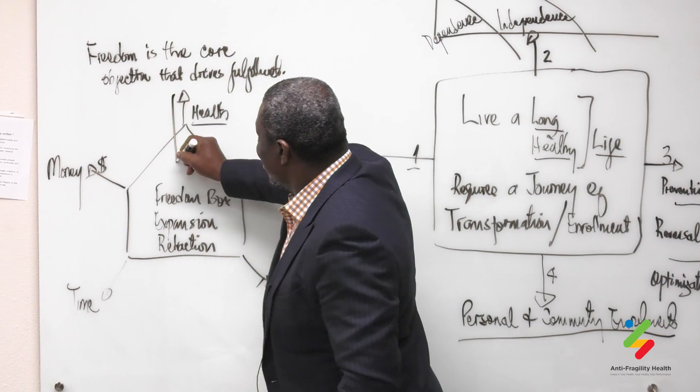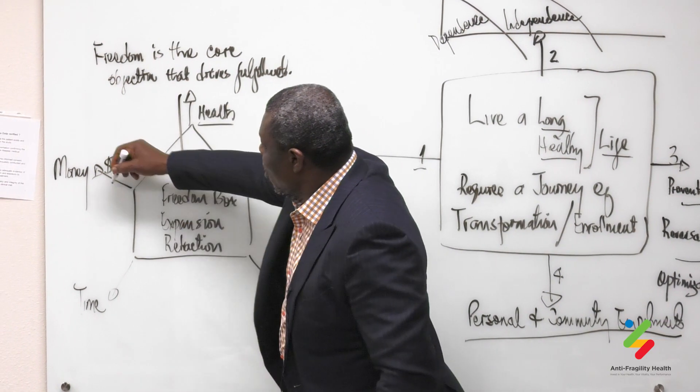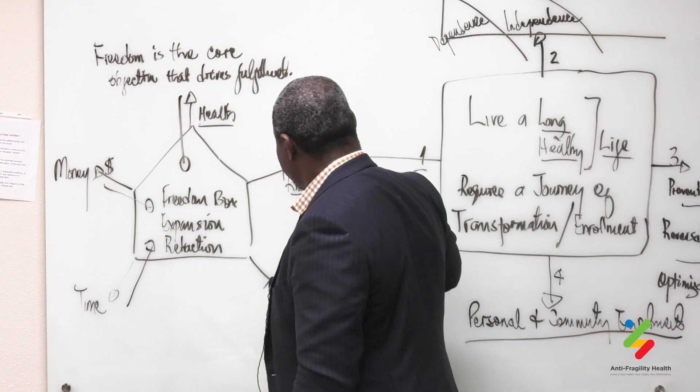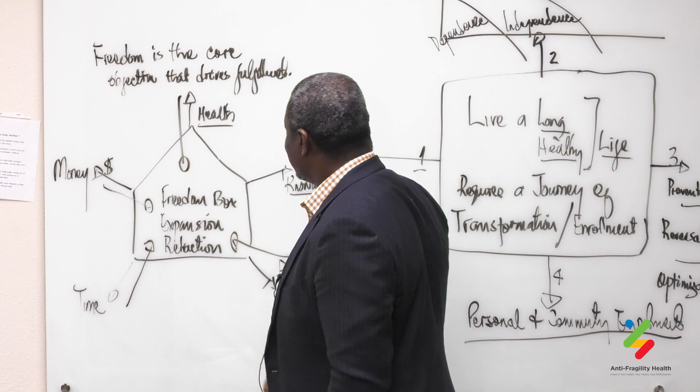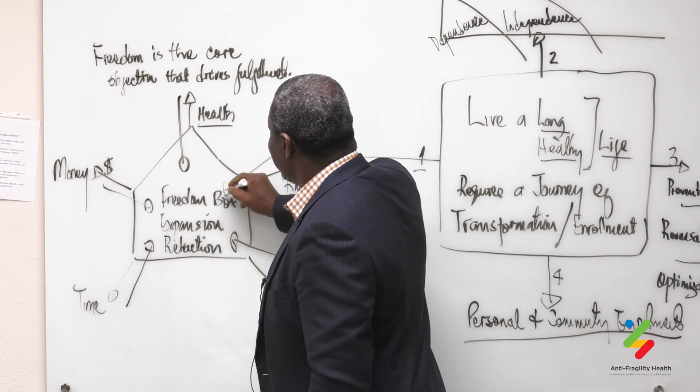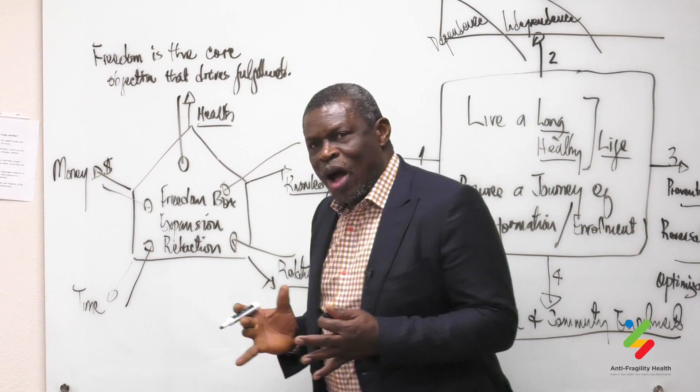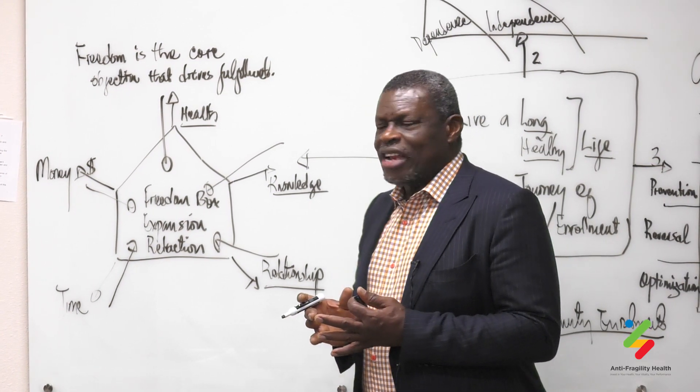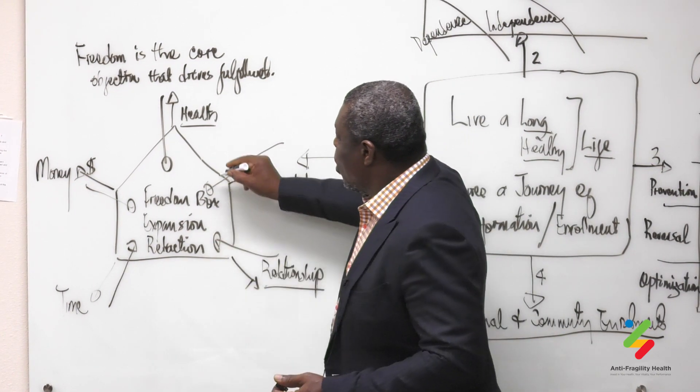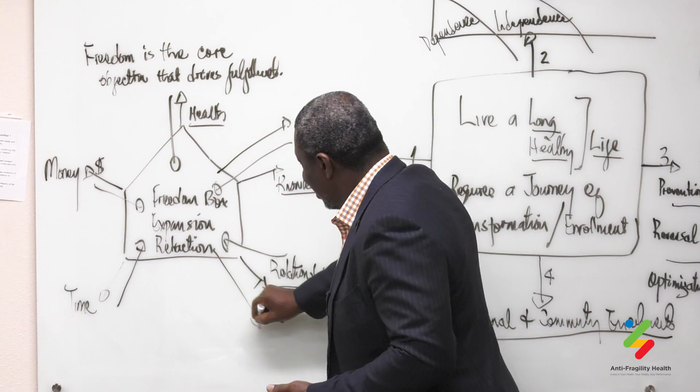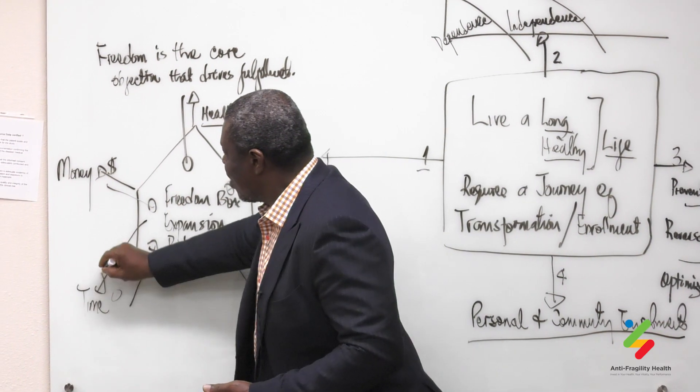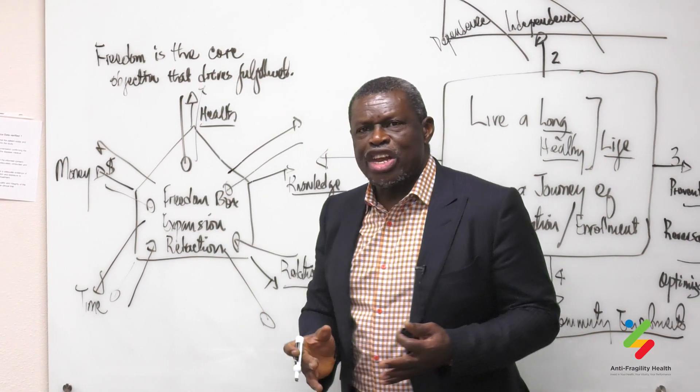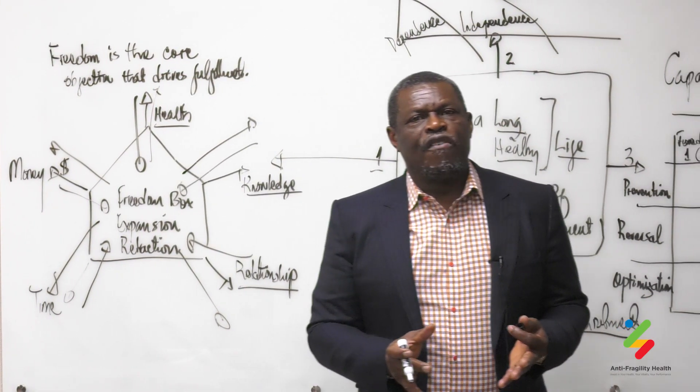The expansion and contraction of these things gives us a sense of security or insecurity. So when our health reduces or our money reduces or we are always short of time or we don't have productive relationships and we don't have knowledge, our freedom box shrinks, not all at the same time, but different. When those things increase, our freedom increases.